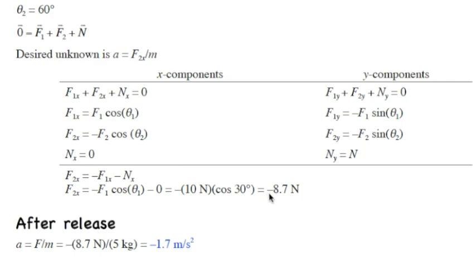To give us minus 8.7 Newtons is the net force acting on the box, and it's in the negative X direction. Well, I should say 8.7 Newtons in the negative X direction.